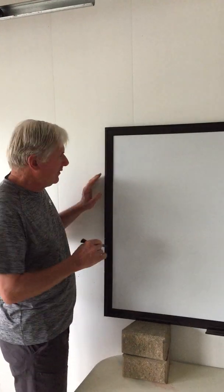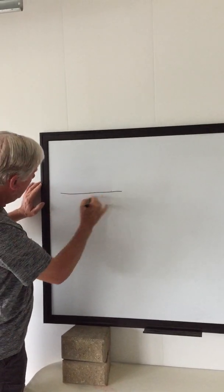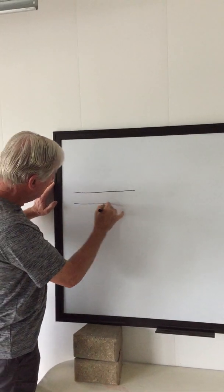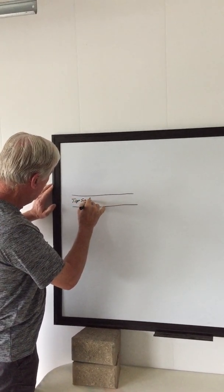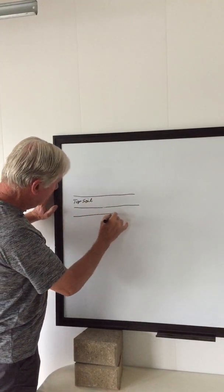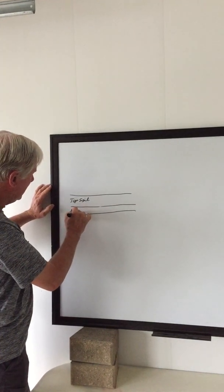hopefully you'll be able to understand what's involved. So if we diagram the topsoil as this layer, typically what you find in conventional soils, you find a layer below the topsoil which we refer to as hardpan.